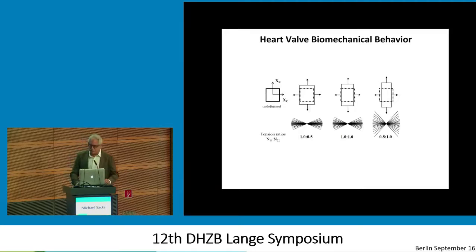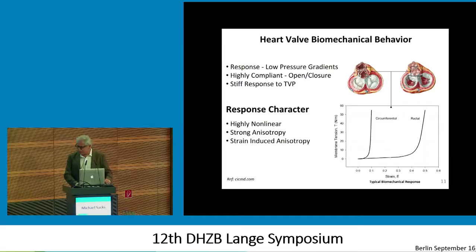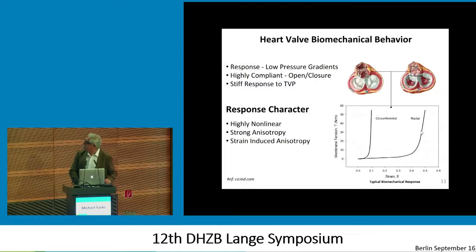In summary, it's a response to very low pressure gradients. If you pick up the leaflets, they're very floppy — very soft and flexible until you pull on them, and then they're extraordinarily strong. They do this largely through these very unique stress-strain curves where you have a long compliant region that then stiffens. And if you notice, the two major directions are quite different — this is called mechanical anisotropy.